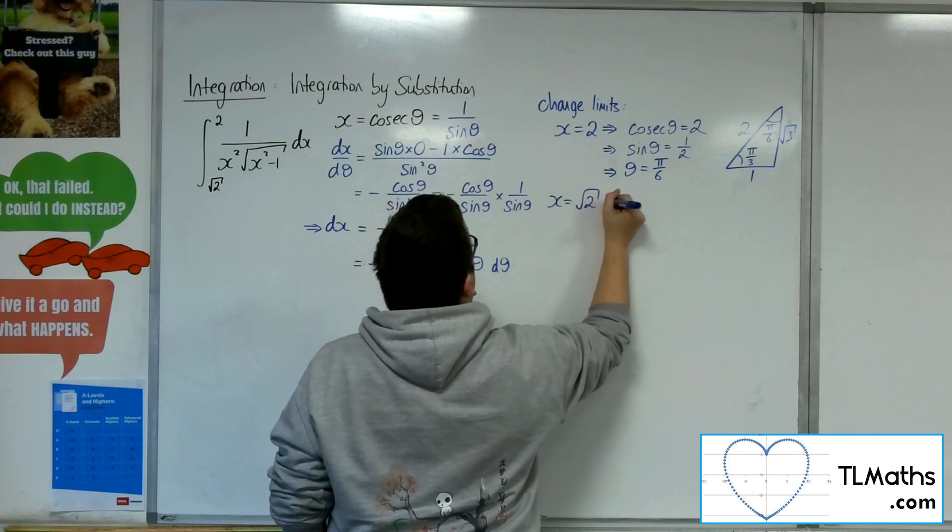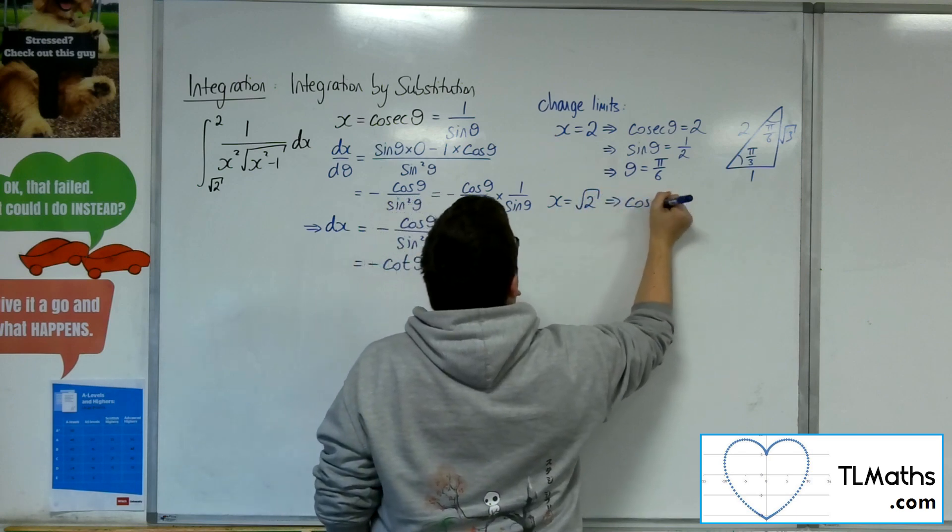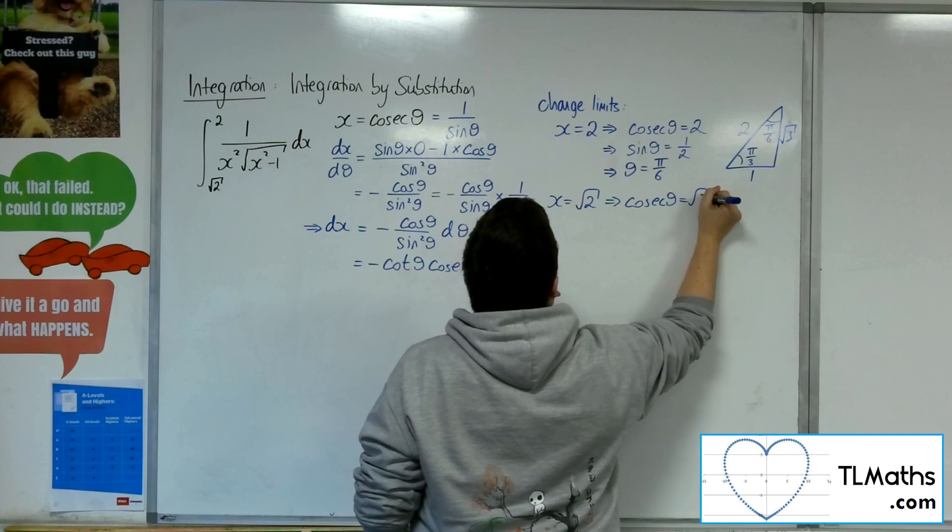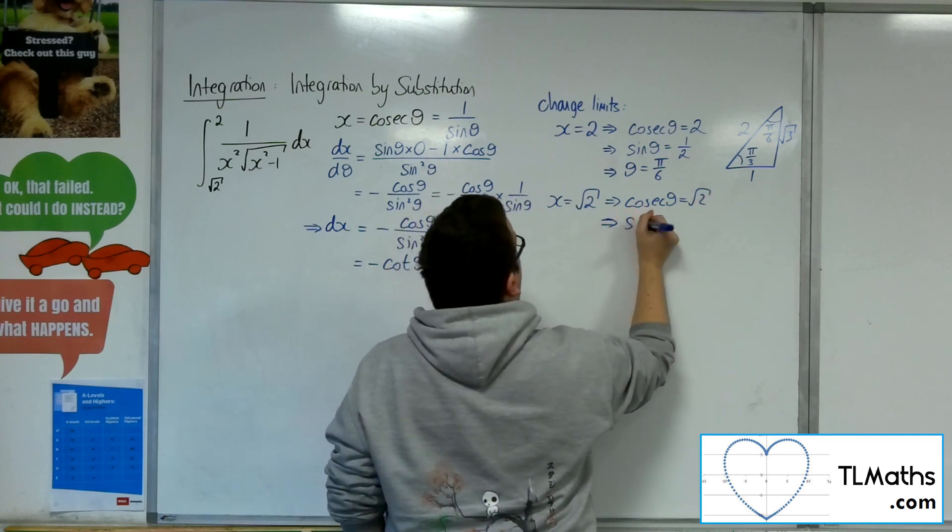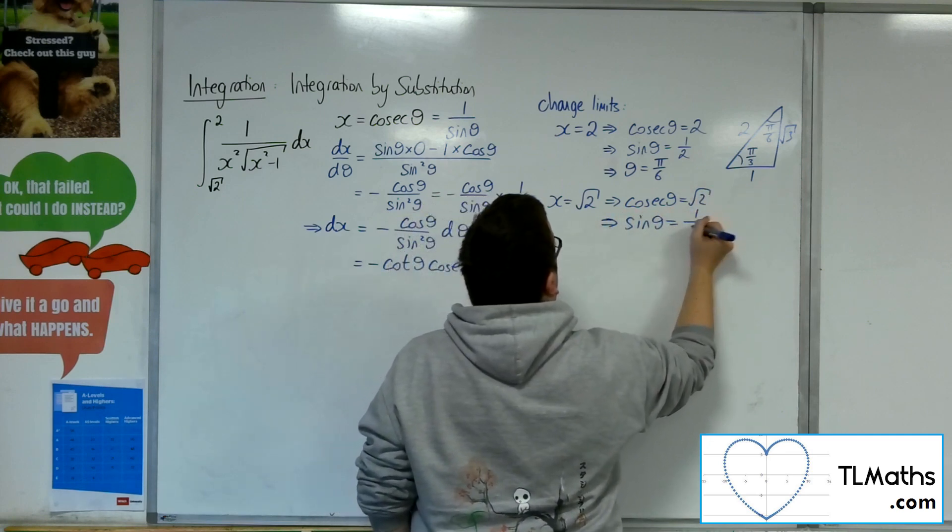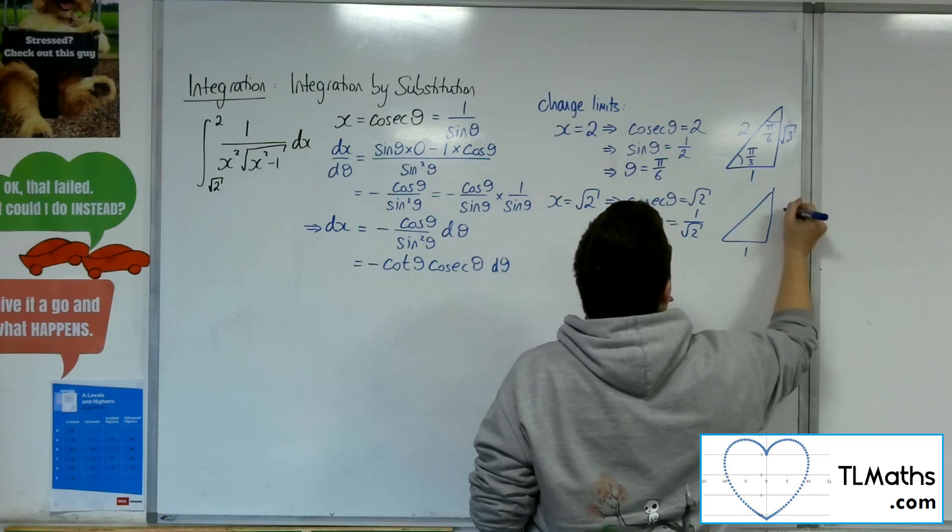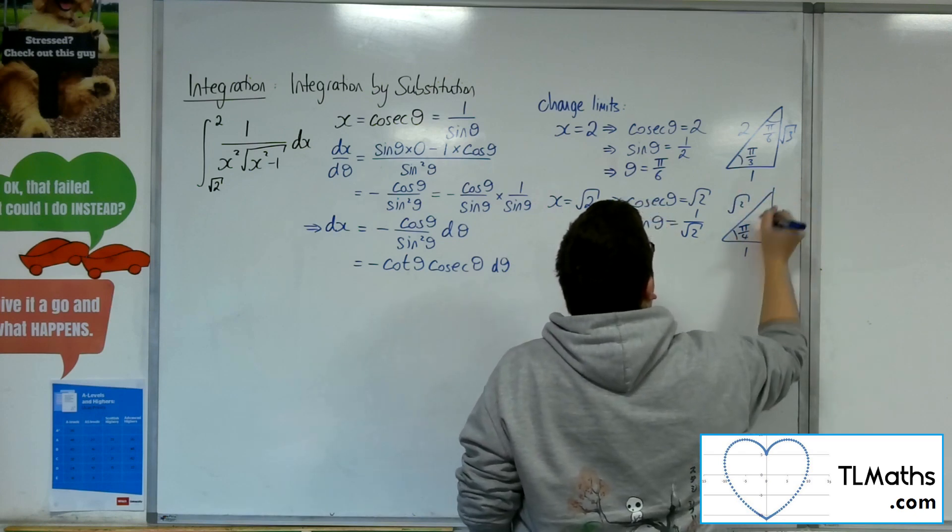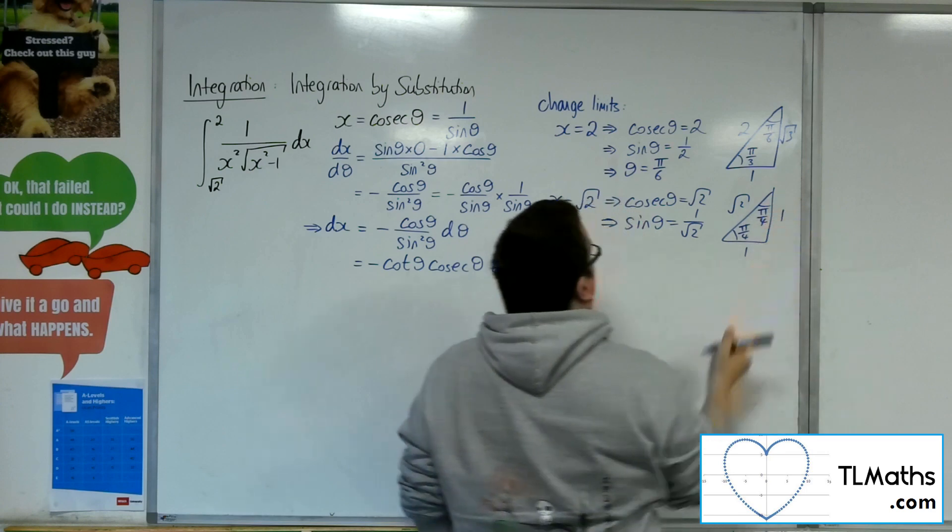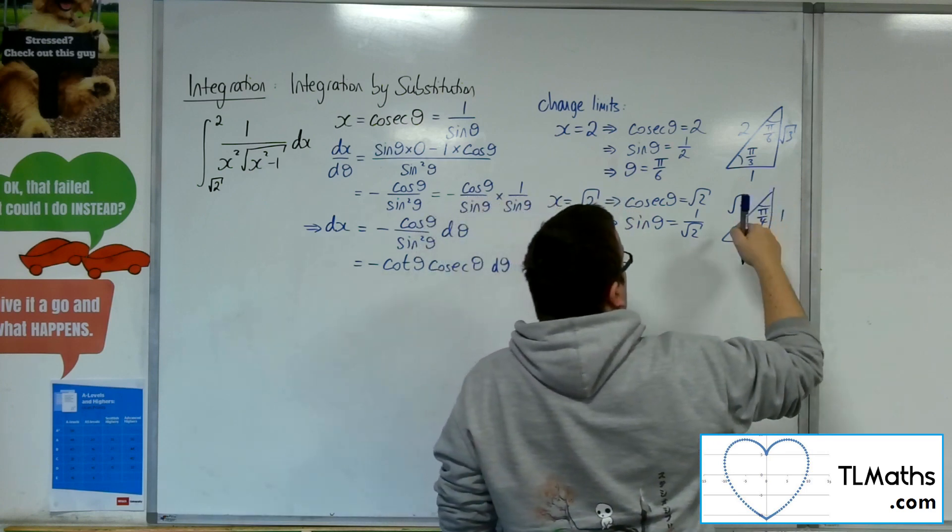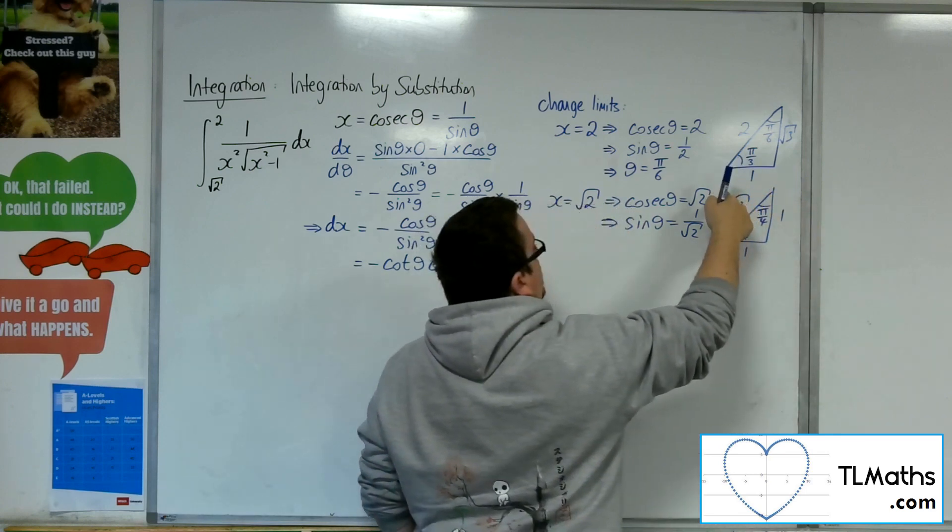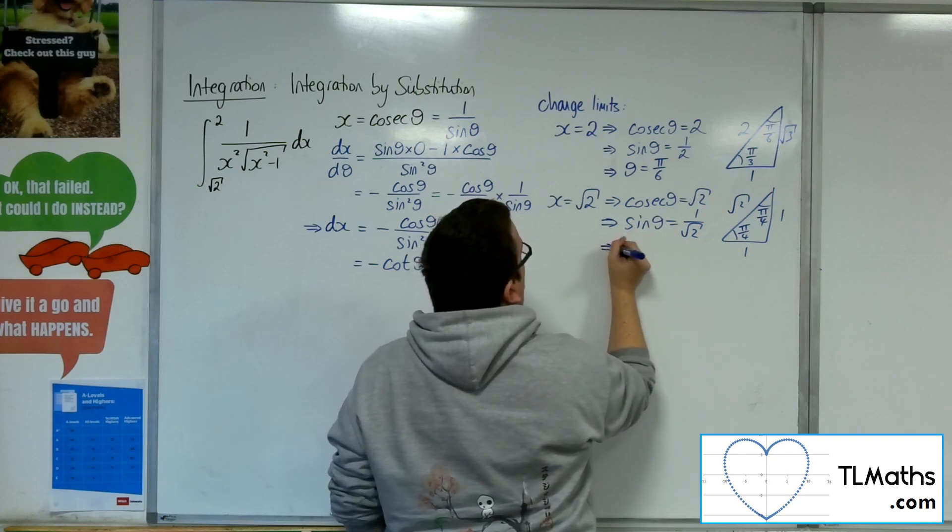Now when x is equal to root 2, cosec theta equals root 2. So that means that sine of theta would need to be 1 over root 2. Now that, of course, is going to use the other triangle. Well, that's pi over 4 and pi over 4. So our opposite over hypotenuse, so theta would have to be pi over 4.